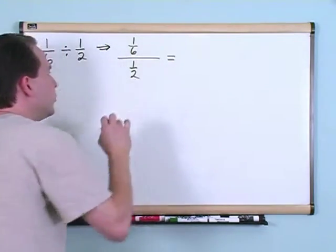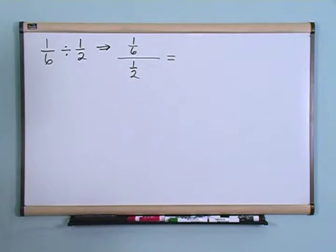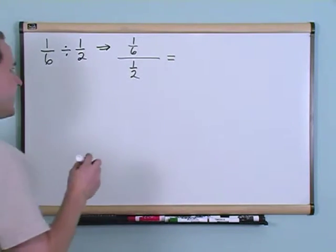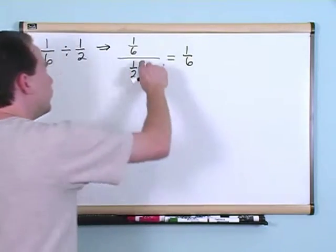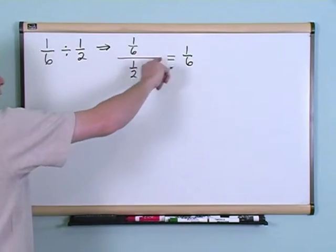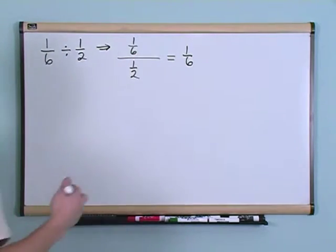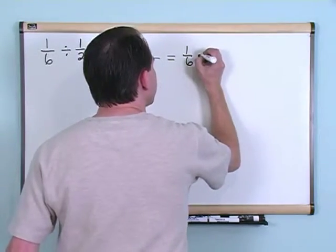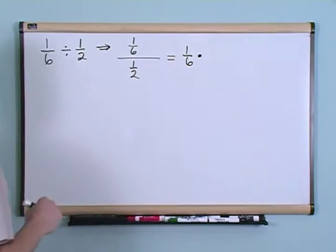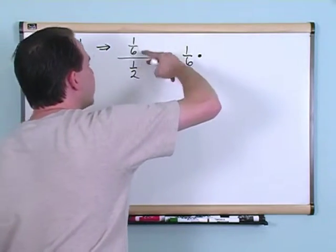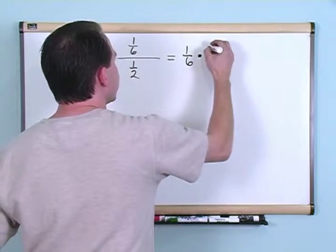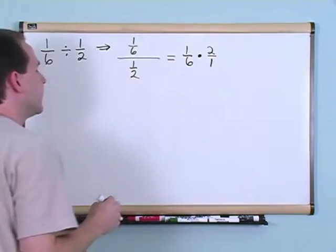The way in which you do division of fractions is very simple. You just take the top number, one sixth, and you change this division, which is this big line here, into multiplication. But when you do that, so you change it into multiplication, so you put a big dot here, that means multiplication. But you're not going to multiply by half, you're going to multiply and flip this fraction over. So you're going to multiply by two over one.